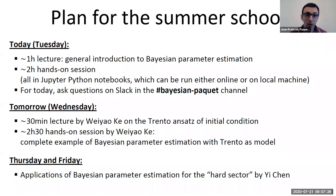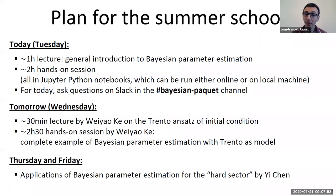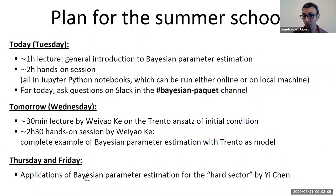Tomorrow, Weyao will give a short lecture on the Trento model, which is the initial stage of the Jetscape framework, followed by roughly two and a half hours of hands-on sessions on Bayesian parameter estimation using Trento as the model to calibrate on data. Everything covered today will be revisited in that example — Weyao's session will be a step up from today's. Later this week, there will also be examples on applying Bayesian parameter estimation for the hard sector by Yi Shen.